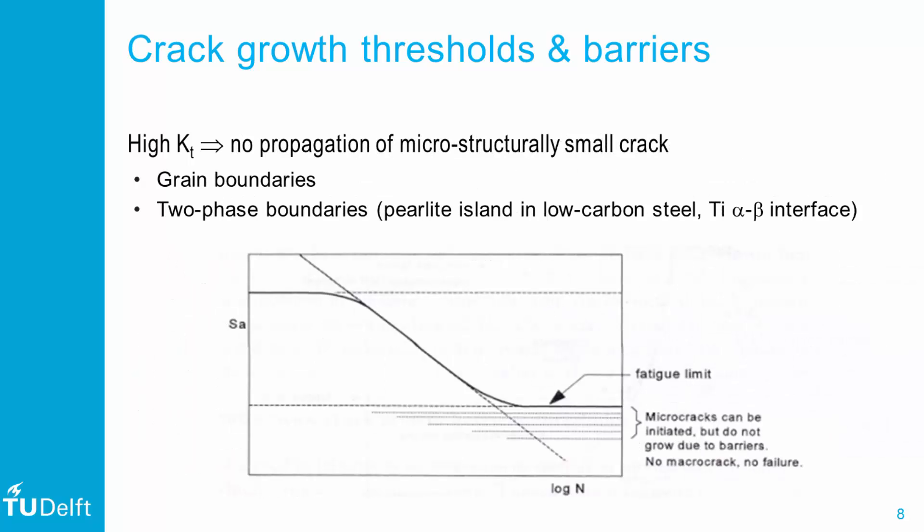Several types of barriers may be identified. Although grain barriers don't stop crack growth, a microcrack may nucleate within a grain without penetrating into neighboring grains. Two-phase barriers such as pearlite islands in low-carbon steel or alpha-beta interfaces in titanium alloys may also form such microstructural barriers. The fatigue limit, represented by the lower asymptote in the SN curve, does not represent the limit on crack nucleation, but on propagation of cracks until failure. Below the fatigue limit, cracks may nucleate but do not grow to macroscopic lengths.